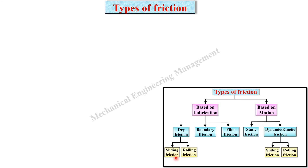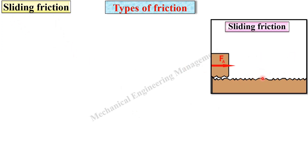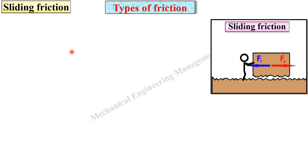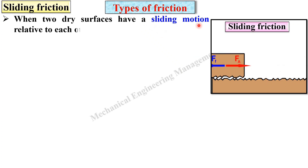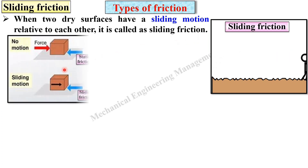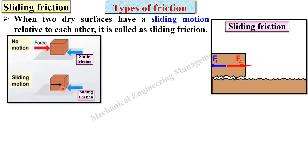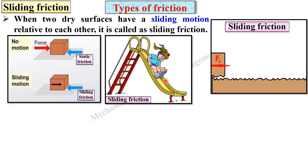Dry friction is also classified into two categories. First, sliding friction — when two dry surfaces have a sliding motion relative to each other, it is called sliding friction. In the figure you can see there is a sliding motion, which is why it is called sliding friction.